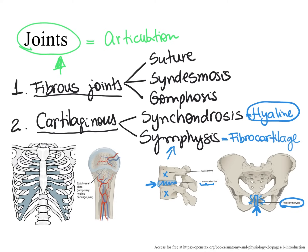Going back to synchondrosis: the root 'chondro' means cartilage. The most abundant cartilage type is hyaline cartilage, which is tough but somewhat flexible. If you press on your thoracic cage and feel the cartilage pieces moving, you can conclude that is hyaline cartilage — it is hyaline cartilage connecting your ribs to the sternum. Therefore, this joint between the ribs and the sternum, made of hyaline cartilage, is a synchondrosis cartilaginous joint.